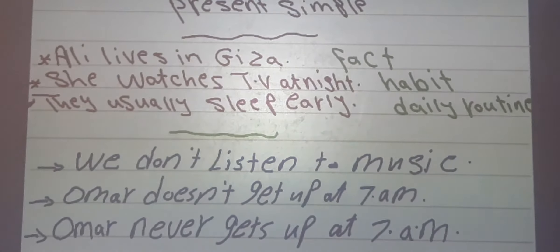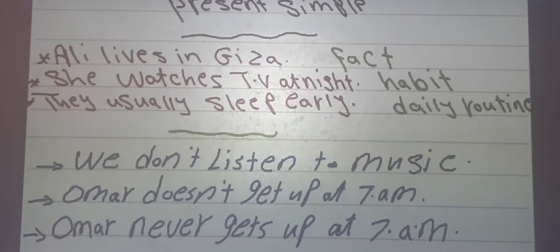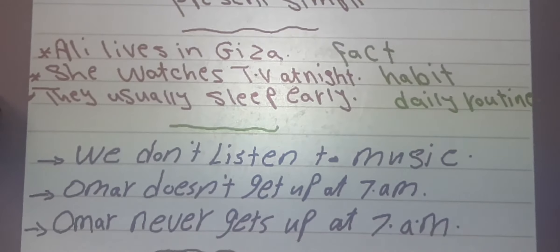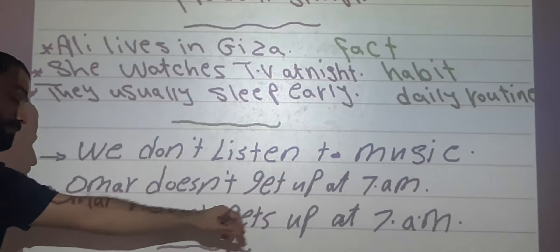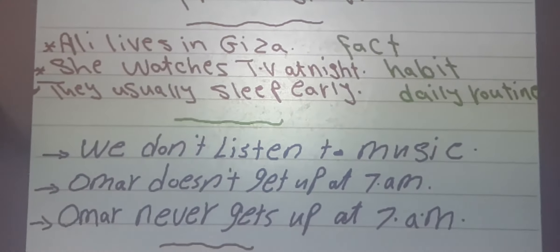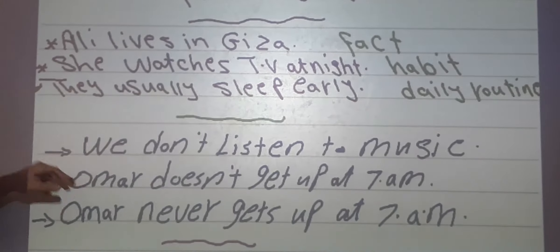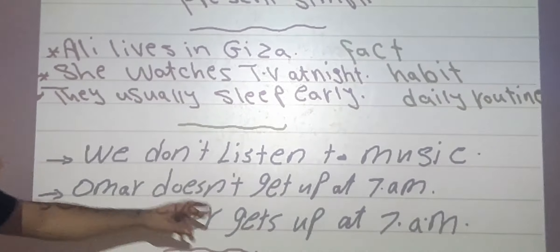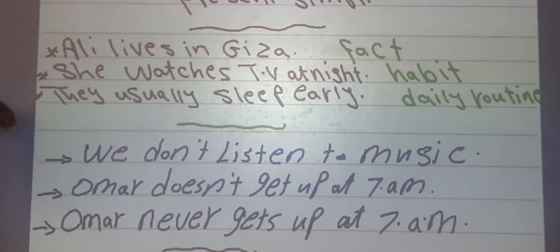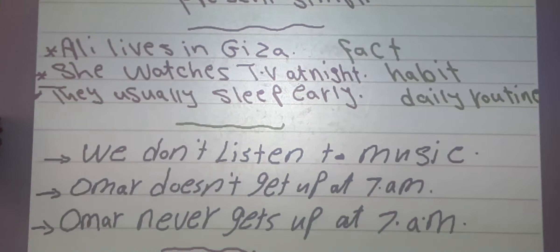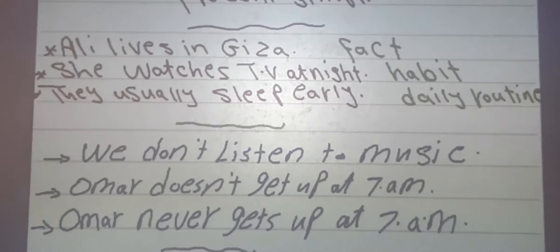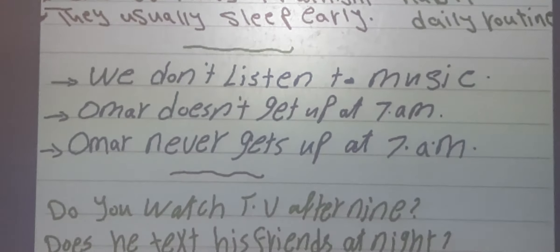If we want to make a negative sentence: we don't listen to music — we use don't with plural pronouns. Homer doesn't get up at 7 o'clock — we use doesn't plus the infinitive. But pay attention: Homer doesn't get up versus Homer never gets up. With doesn't we use the verb infinitive, but with an adverb of frequency we keep the S as it is.